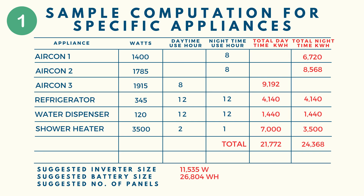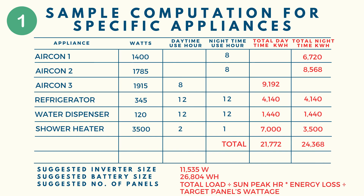For the panels, we need to find how many pieces are required. Divide the total load of 46,140 by 4 (sun peak hours), then multiply by 30% for energy loss. Assuming a target panel of 550 watts, divide the result by 550 to get the number of panels needed.